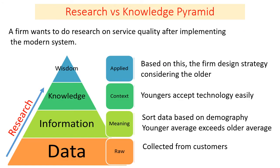Let's see the relationship between research and the knowledge pyramid. The knowledge pyramid has four levels of understanding, which starts from data, goes through information, knowledge, and the top — the highest level of understanding — is wisdom. Data is just figures or facts which do not have any meaning. When we provide meaning for this data, it becomes information. Information tells us about something — it has a meaning.